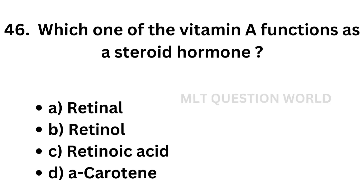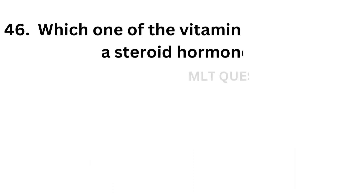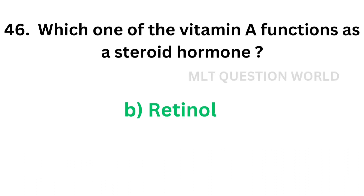Question number 46: Which vitamin A form functions as a steroid hormone? Option A: retinol, option B: retinal, option C: retinoic acid, option D: carotene. The correct answer is option C, retinoic acid. The vitamin A form that functions as a steroid hormone is retinoic acid.